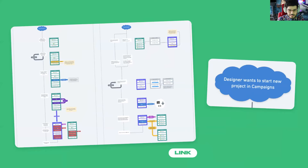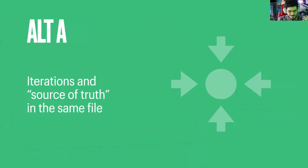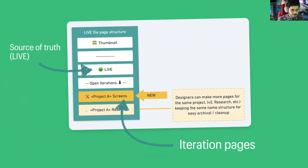I also asked around Twitter and found other designers going through the same sort of questions. The answers varied quite a bit, but I identified two major strategies. I mapped these into a Whimsical flow going through the same starting point from the perspective of a designer on our team — starting a new project and wanting to get work done. Our first alternative was: what if you keep the iterations and the source of truth in the same file, kind of replicating what we had with Abstract's open branches?